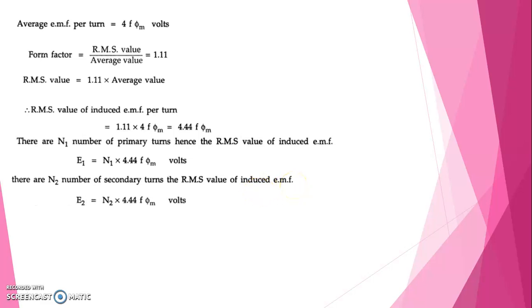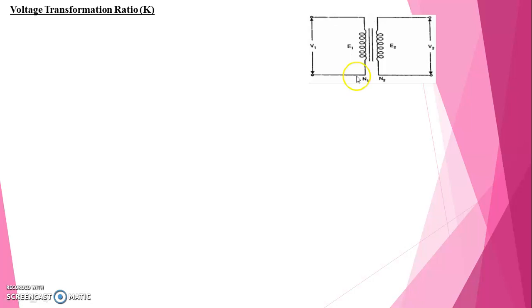Voltage transformation ratio. This is the symbolic representation for transformer. Input side V1 primary voltage, V2 secondary voltage, E1 primary EMF, E2 secondary EMF, N1 number of turns at primary, N2 is number of turns in secondary. Voltage transformation ratio indicated using the letter k, it is a ratio between secondary EMF to primary EMF and it is also equal to secondary number of turns to primary number of turns.